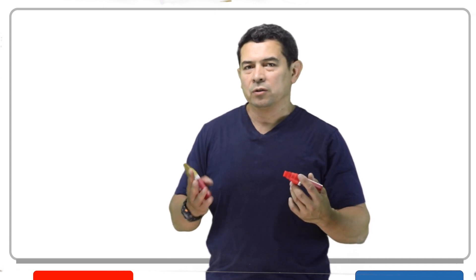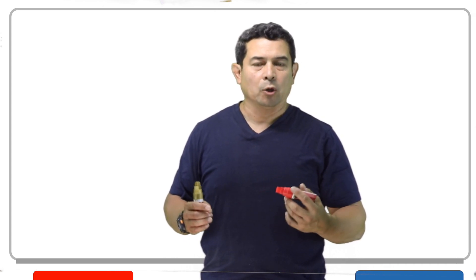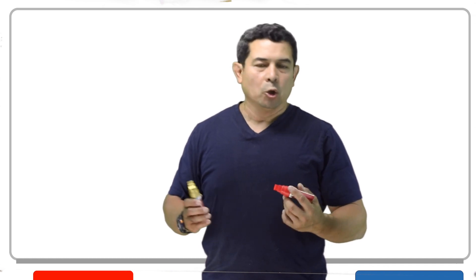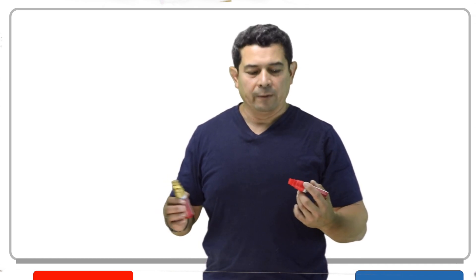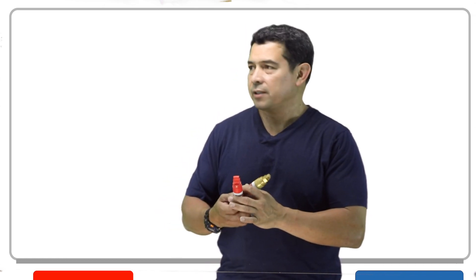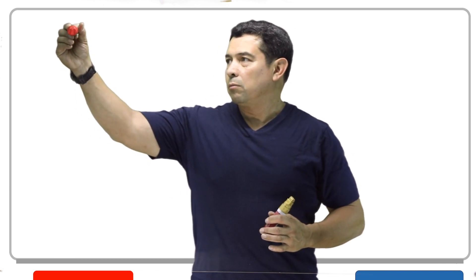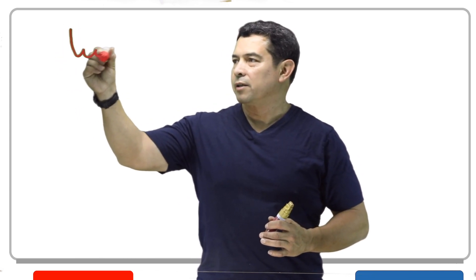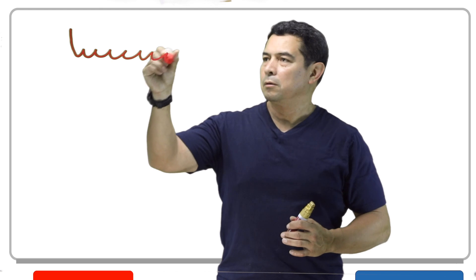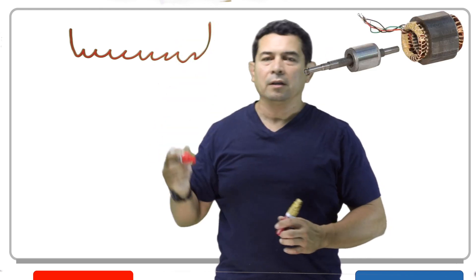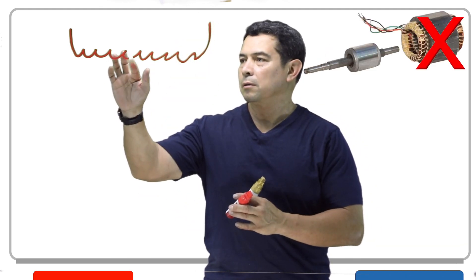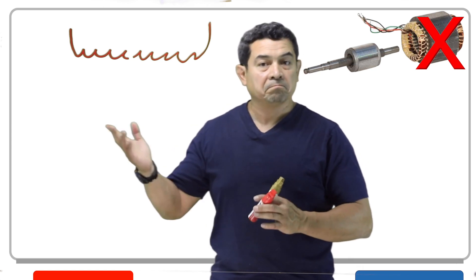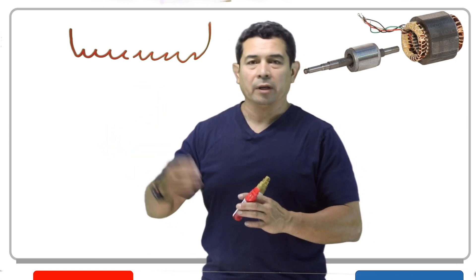But the other one, this one's kind of easy to talk about, which is an open. What is an open? An open is basically a break in the line. So if we happen to have, let's say, a winding like this, and that happened, well that would be an open.